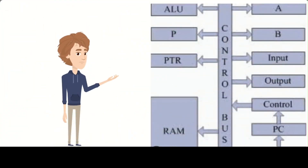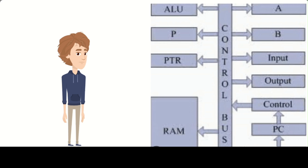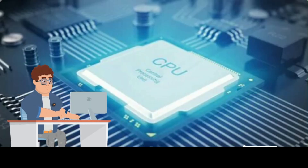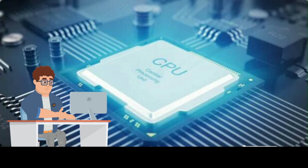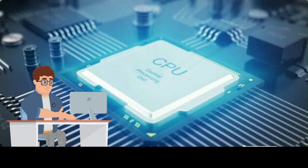Fifth is the IO signal, which is used to control input and output operations. When the IO signal is sent, the CPU can perform input or output operations to or from peripheral devices. The control bus is managed by a component called the control unit, which is responsible for coordinating the signals sent over the control bus and ensuring that the system behaves correctly. The control unit is typically integrated into the CPU and is responsible for fetching instructions from memory, decoding them, and executing them.